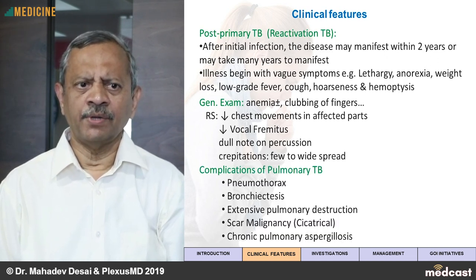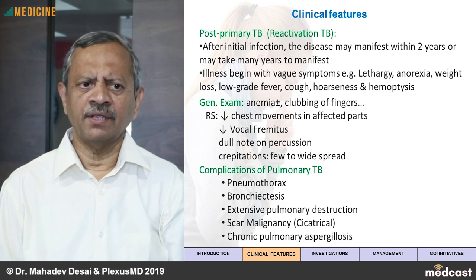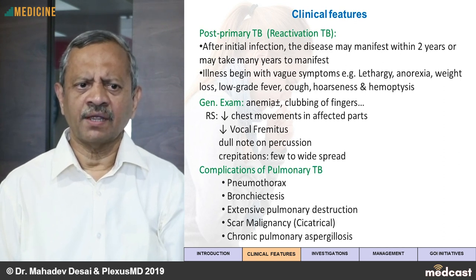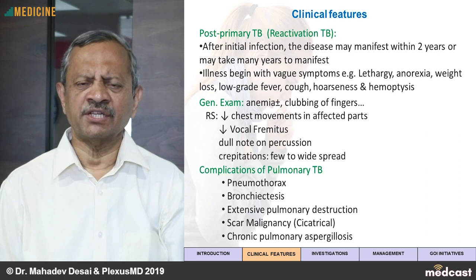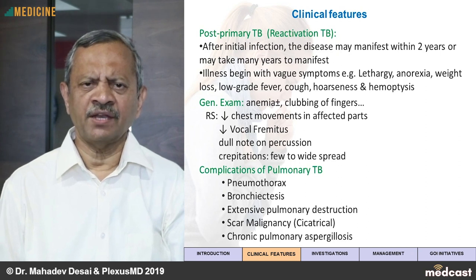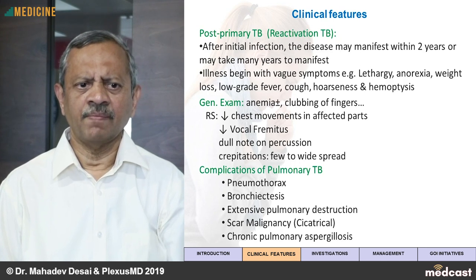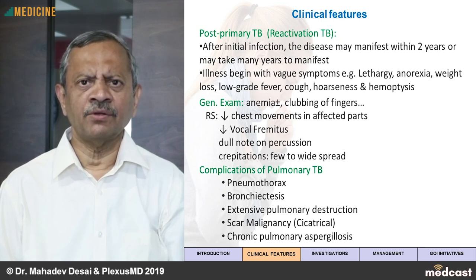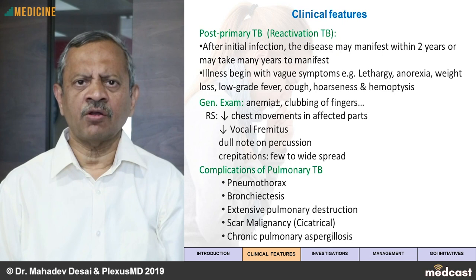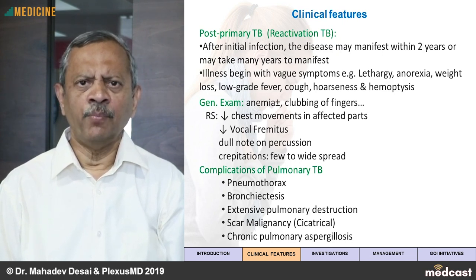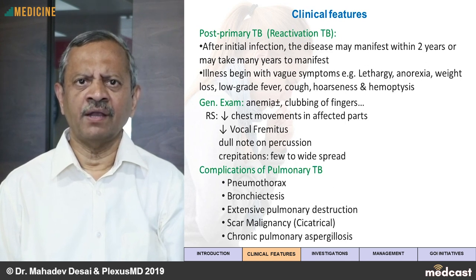Complications are many. Tuberculosis can lead to pneumothorax, bronchiectasis and extensive pulmonary destruction. The most widely destroyed X-ray pictures are usually because of tuberculosis. There may be malignancy in the long run from the scar of a past tuberculosis focus. One important complication is chronic pulmonary aspergillosis — a fungal infection occurring in old tuberculosis lesions.